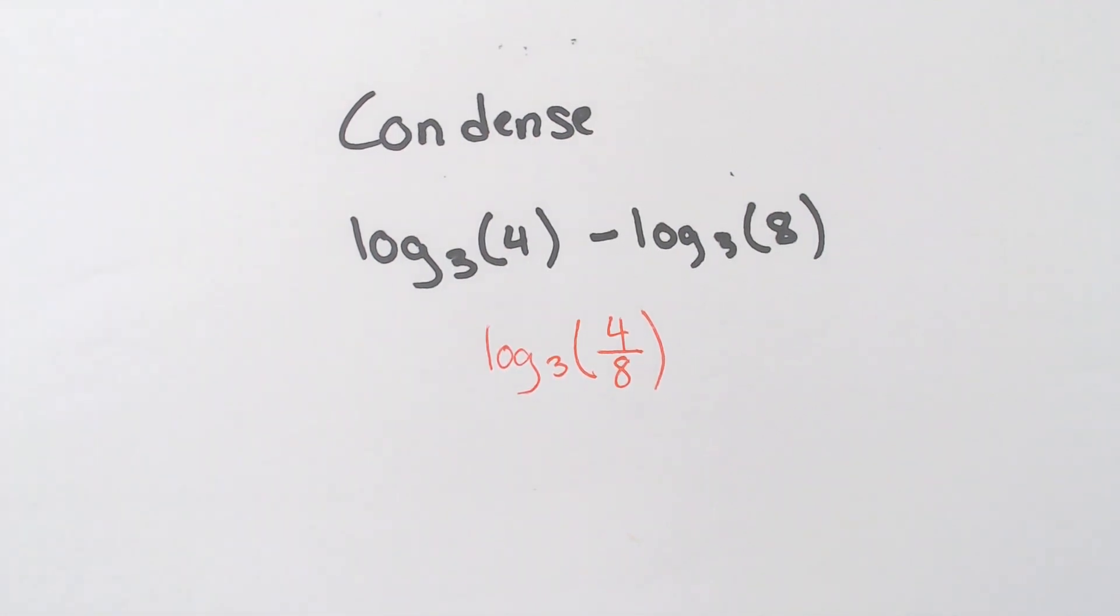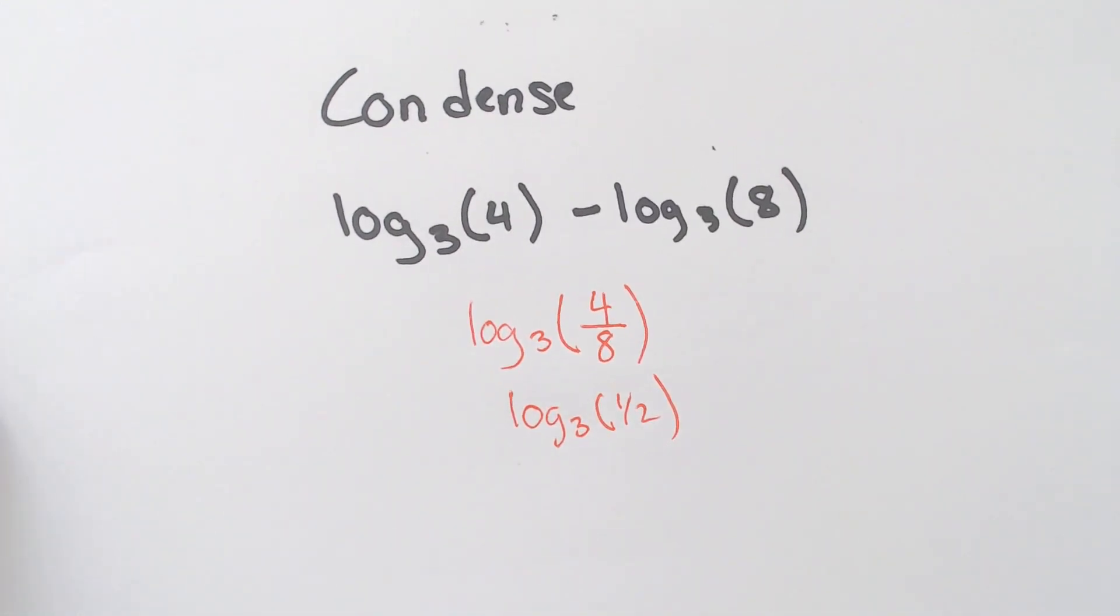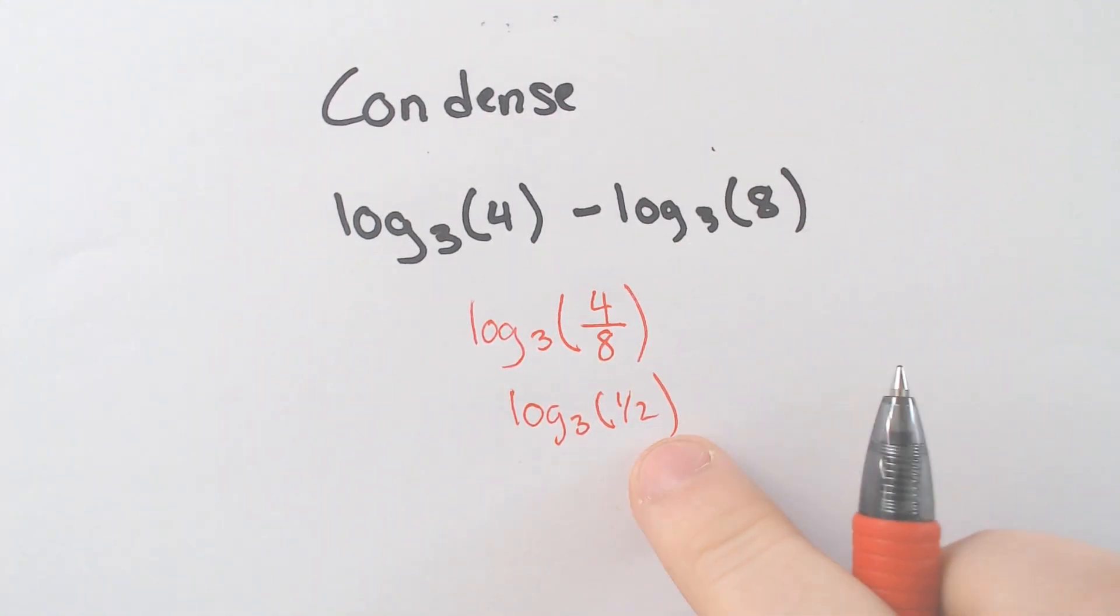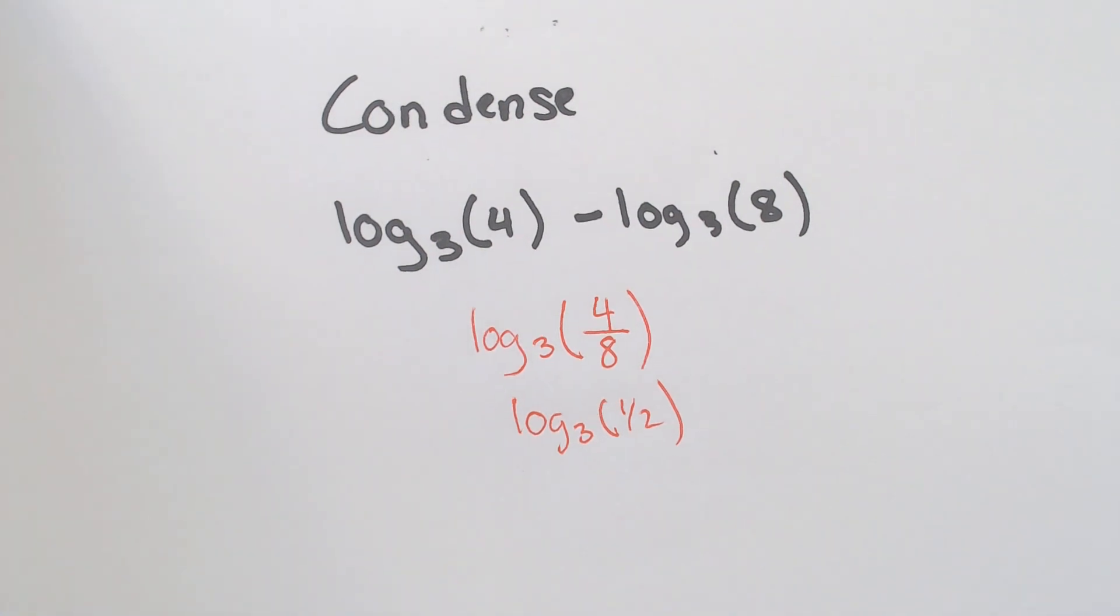Now, sometimes you're going to have to either simplify or evaluate these. Log 3 of 4 over 8 is the same thing as saying log 3 of 1 half. Now, if you notice that there's some sort of correlation between 3 and 1 half, then you could evaluate it. For instance, if this said log base 3 of 9, you probably could do something. But log 3 of 1 half can't really do anything. In most cases, you can't evaluate these, at least not without a calculator.